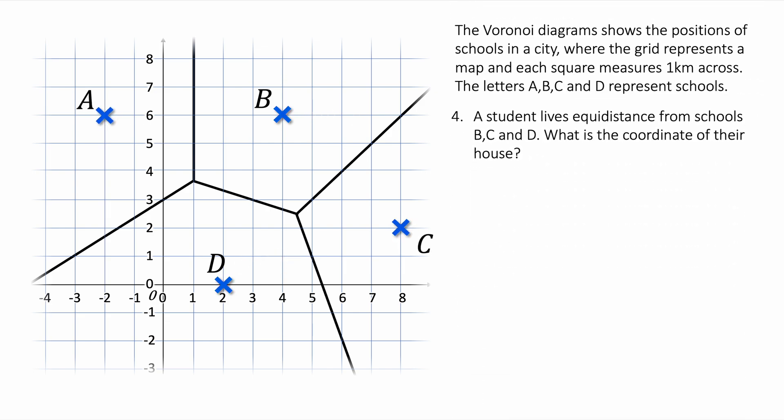Let's look at question four. A student lives equidistance from schools B, C, and D. What is the coordinate of their house? The word equidistance means equal distance. What coordinate is equal distance from B, C, and D? Well, it's this coordinate here where all three perpendicular bisectors cross over. So they live at about (4.5, 2.5). That is an estimate based upon reading the graph.